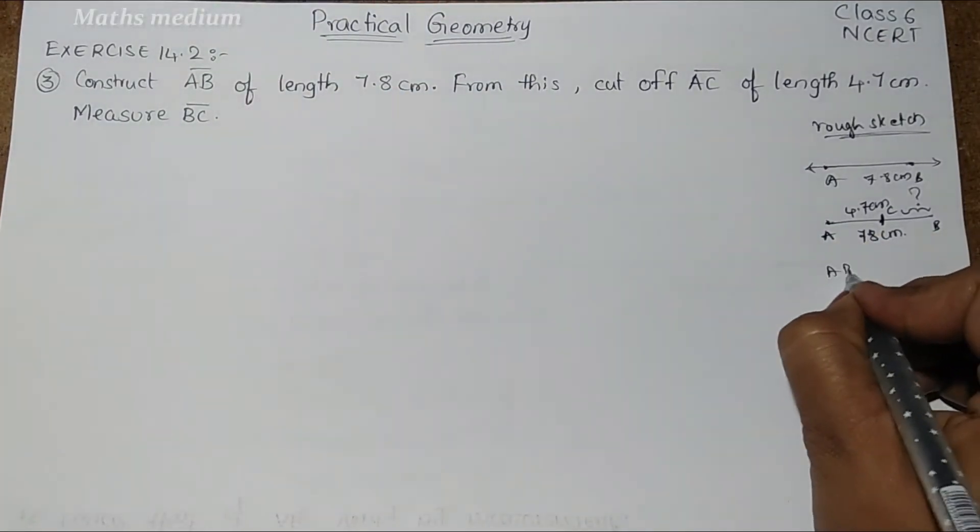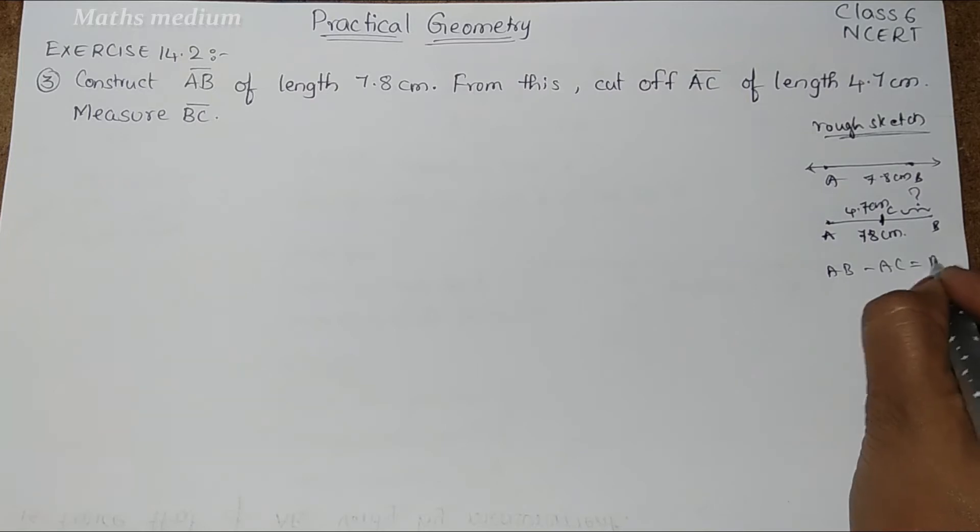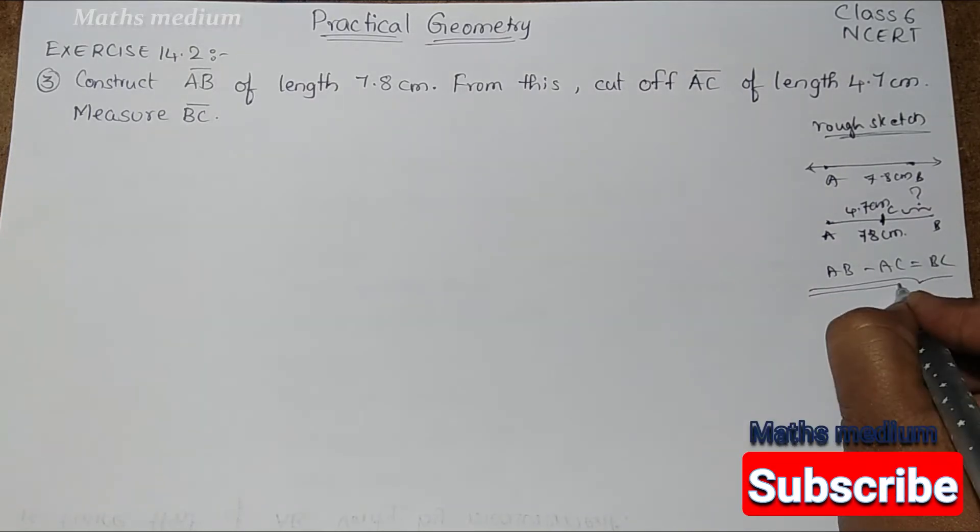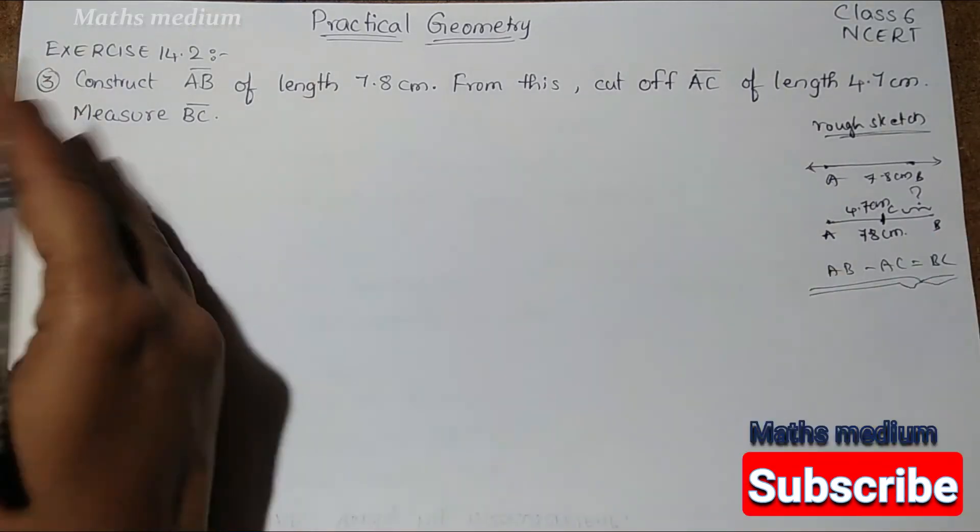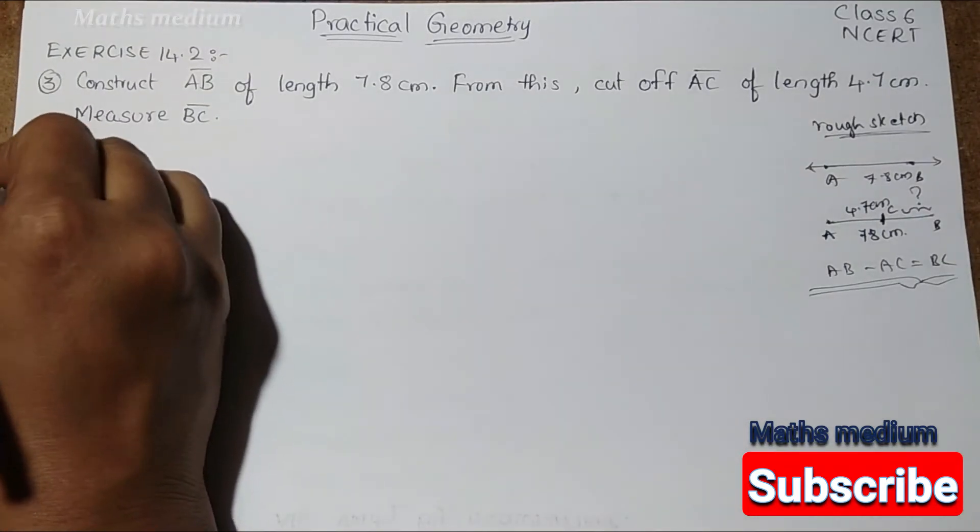For this, AB minus AC, we got BC. That is the formula for the easiest way. Let's start construction.